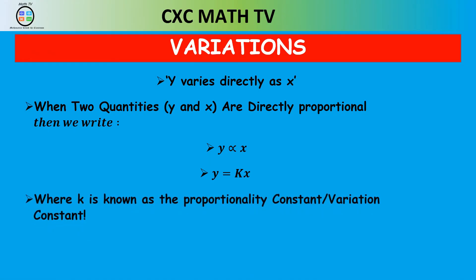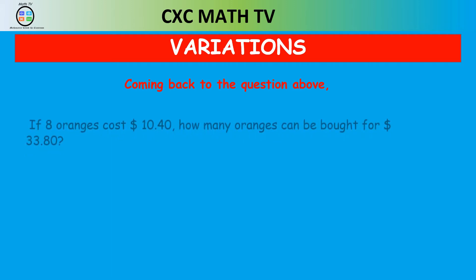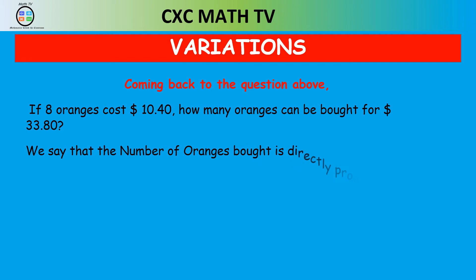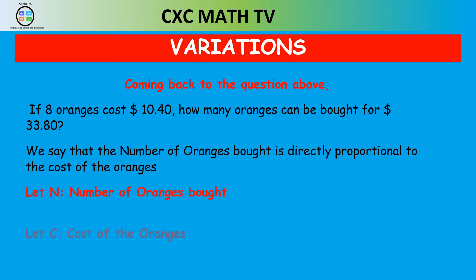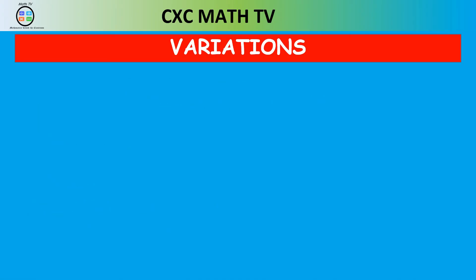Now let's go back to the question: if eight oranges cost $10.40, how many oranges can be bought for $33.80? We say the number of oranges bought is directly proportional to the cost of the oranges, which is true because if you buy more oranges you spend more money. So let n represent the number of oranges bought and c represent the cost. Since they're directly proportional, we write n is proportional to c.